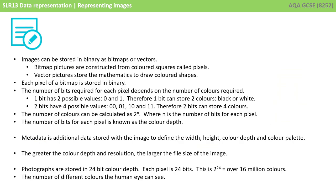So, let's just recap. Images can be stored in binary as bitmaps or vectors. Bitmap pictures are constructed from coloured squares called pixels. Vector pictures store the mathematics to draw colour shapes.